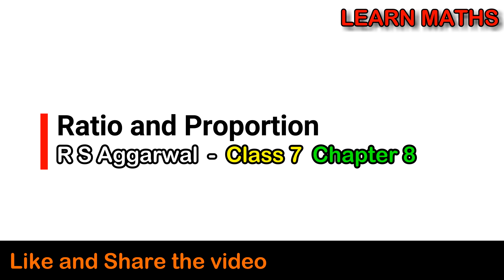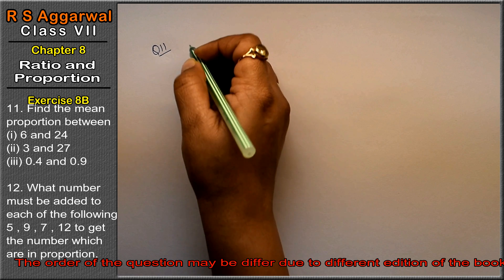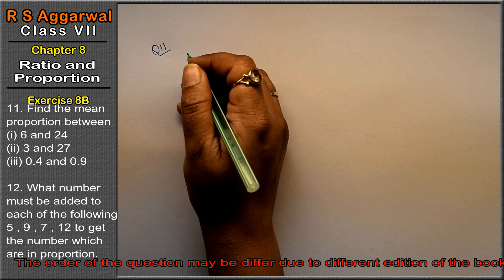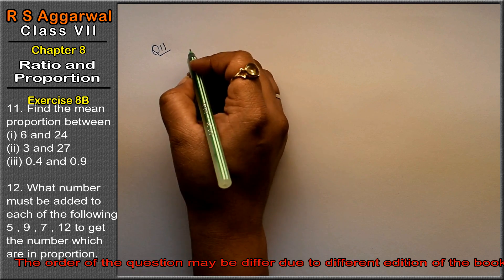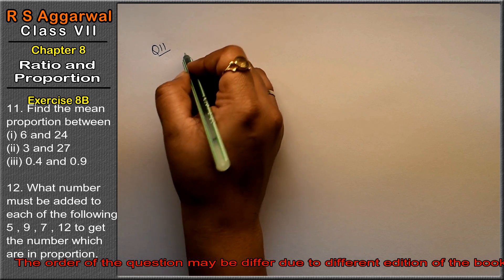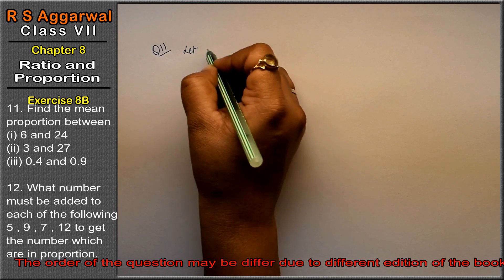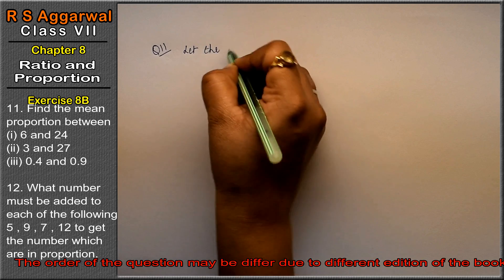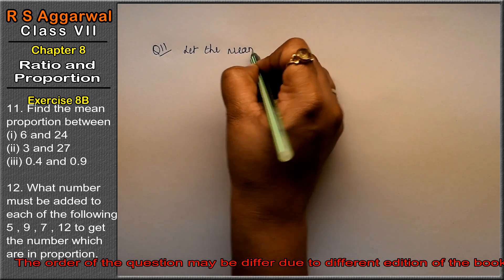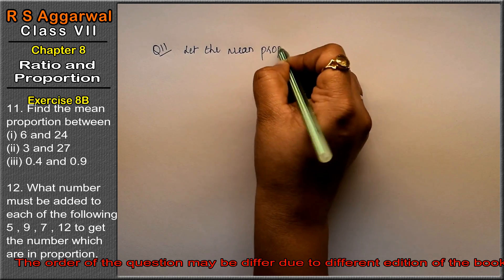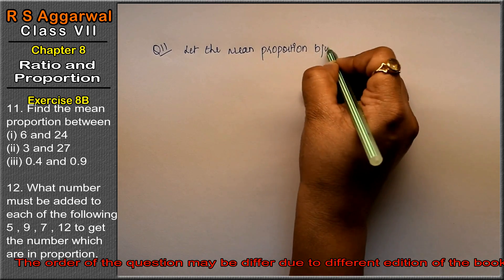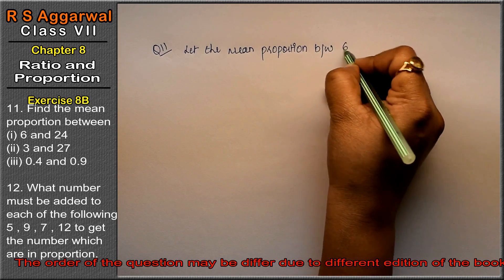Let us do question number 11 of exercise 8b, that is ratio and proportion. Question number 11 is: find the mean proportion between 6 and 24. Let the mean proportion between 6 and 24 be x.